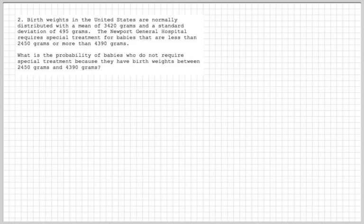And basically, they want to know what is the probability of babies who do not require special treatment because they have birth weights between 2450 grams through 4390 grams. The key word here is normally distributed, which means that it's going to be a normal distribution type problem. And the mean and the standard deviation are the population mean and the population standard deviation.